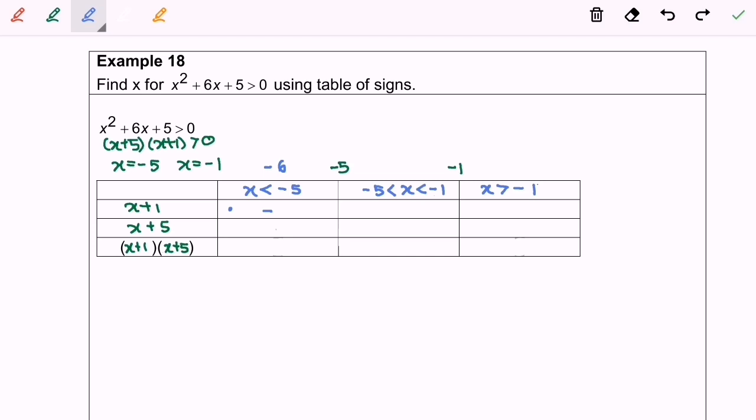For the middle interval, I'll use -2. Substituting into the expression gives a negative value. For the third interval, I'll use 0, which gives a positive value.